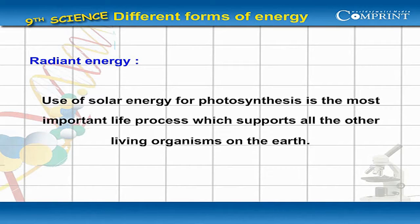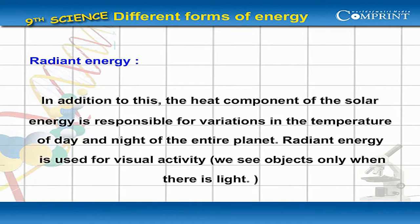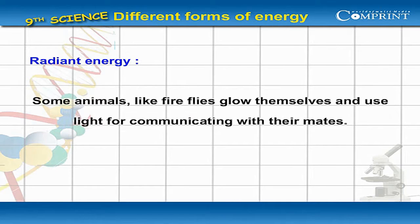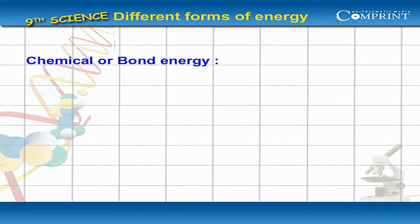Use of solar energy for photosynthesis is the most important life process which supports all other living organisms on Earth. In addition, the heat component of solar energy is responsible for variations in the temperature of day and night of the entire planet. Radiant energy is also used for visual activity — we see objects only when there is light. Some animals like fireflies glow themselves and use light for communicating with their mates.